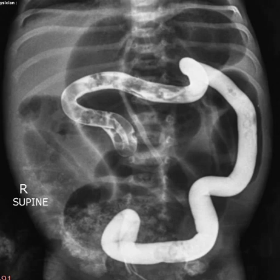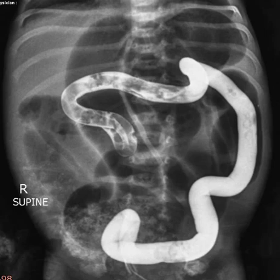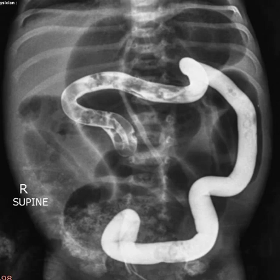First of all, barium will increase constipation, which we said previously. Gastrografin is high osmolar — it will draw water into the colon making it more loose, so it acts as a kind of laxative. But you should be aware of dehydration — you should keep the baby well hydrated. So in such a case, in a child with constipation whether an infant or older, you try to use low osmolar contrast media or gastrografin to prevent further constipation and make things easier for the child.